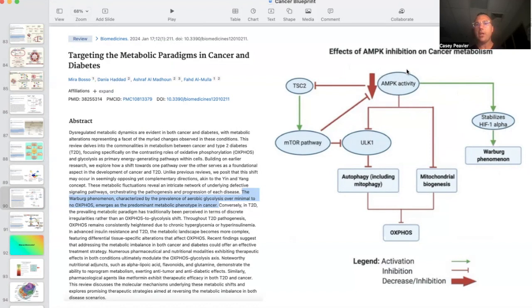So low AMP kinase activation or activity is going to be associated with pseudohypoxia. It's also going to lose control of this TSC2, which is going to activate the anabolic pathways mTOR. And we're going to have other downstream effects related to mitochondria, including lack of autophagy or mitophagy, which is the breakdown of mitochondria. We're going to lose the ability to produce new mitochondria through mitochondrial biogenesis, and that's going to have a negative influence on our ability to produce energy through oxidative phosphorylation. So the Warburg phenomenon, characterized by the prevalence of aerobic glycolysis over minimal to no oxphos, emerges as a predominant metabolic phenotype in cancer, and that's related partially to a lack of AMP kinase activity.